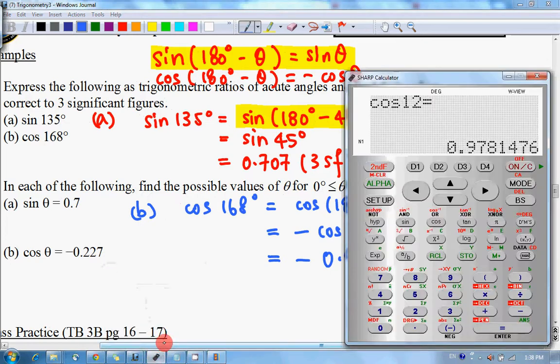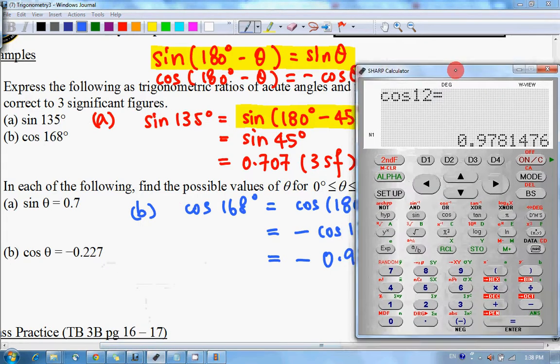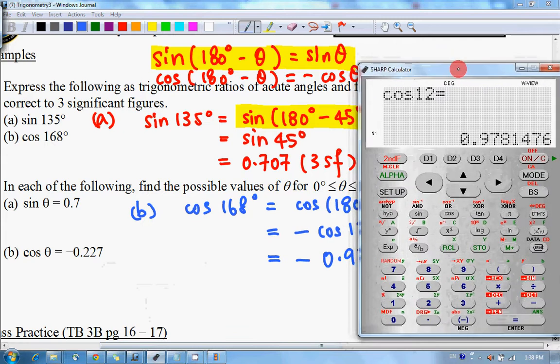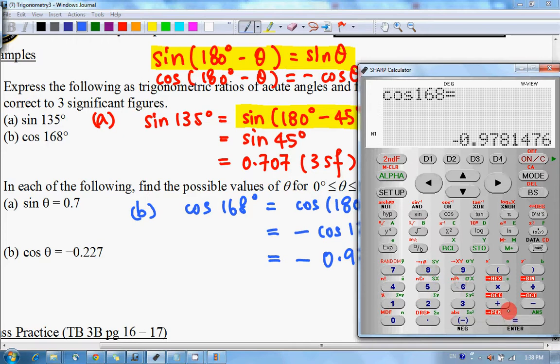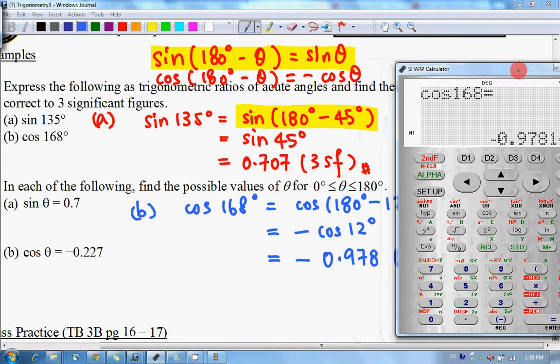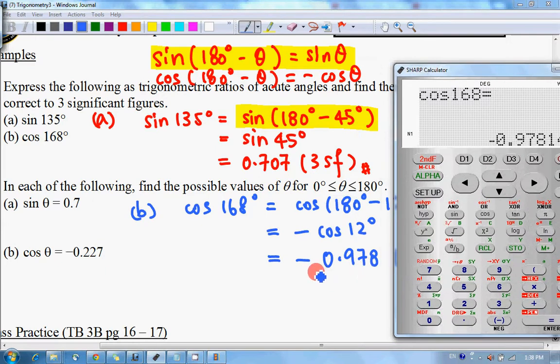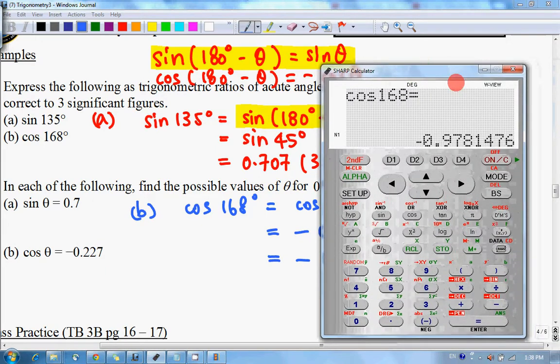In the exam, if you see this question, you don't really have to work out this way unless you are told to do so. Otherwise, you can just press cosine 168 and you'll get negative 0.978, which is exactly the same as what you have here.